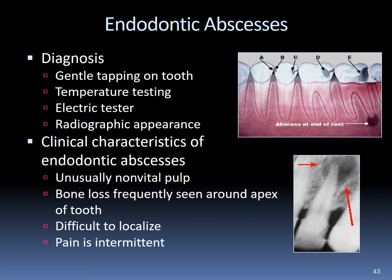Endodontic abscesses can be diagnosed by gently tapping on the coronal part of the tooth. Temperature testing and electric testers are also used to determine tooth vitality. Radiographs can identify an abscess, but in early stages it may not be detectable radiographically. Characteristics include a non-vital or partially vital tooth pulp, bone loss around the apex, intermittent pain, and sometimes difficulty identifying the exact location due to overlapping nerve fibers.